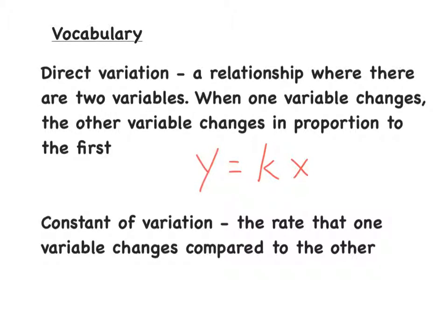So we have two pieces of vocabulary here. The first one is direct variation. What is direct variation? Direct variation is a relationship where there are two variables. When one variable changes, the other variable changes in proportion to the first. The formula used for direct variation is y equals kx.